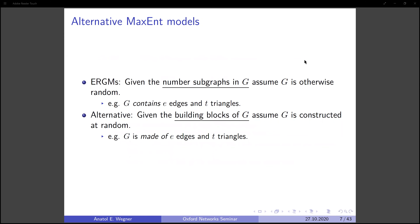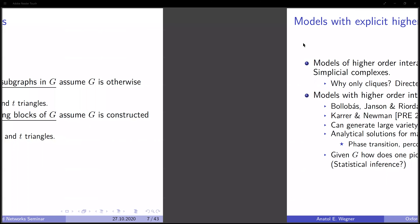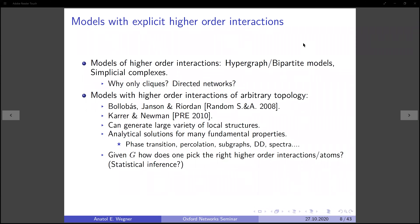Today I'm going to talk about a different kind of maximum entropy model. Instead of constraining the number of occurrences of subgraphs in the network, we're going to consider an alternative set of constraints. We are going to give the building blocks used to construct the graph and then assume these are put together in a maximally random fashion. So instead of saying a graph contains a certain number of edges and triangles, basically we would say it is made using a certain number of edges and a certain number of triangles.